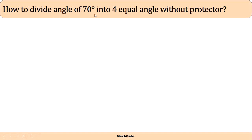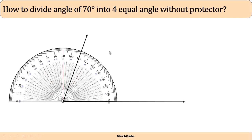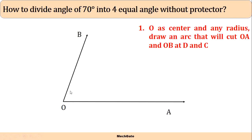To divide 70 degrees into four equal parts, first draw the lines at an angle of 70 degrees — let angle AOB equal 70 degrees. With O as center and any random radius, draw an arc that cuts OA and OB at points D and C respectively.